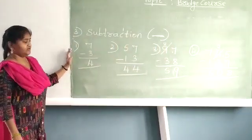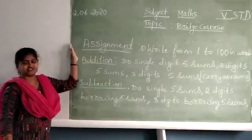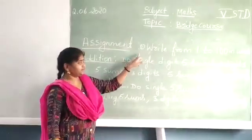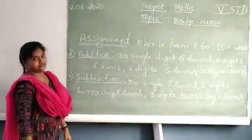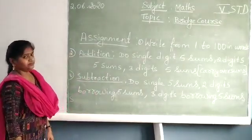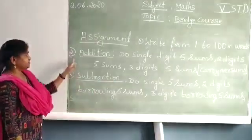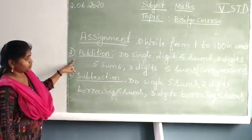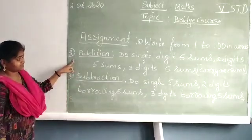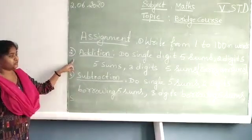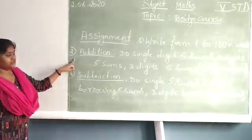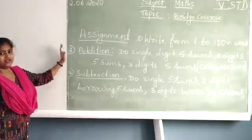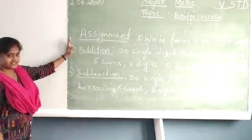So today's assignment: Number 1 — write from 1 to 100 in words. Second homework is addition and subtraction: 2 single digit sums (5 each), 2-digit sums (5 each), and 3-digit sums (5 each). Please don't do simple direct sums — you have to do the carry-over sums, as I showed you in the examples.